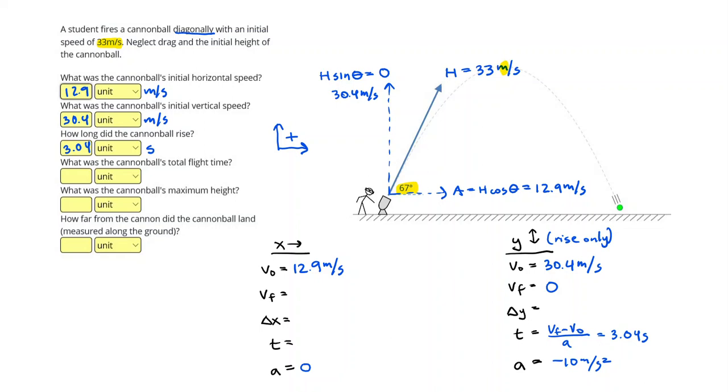Finishing out my y side, to get my displacement, I can do v naught t plus 1 half at squared. Plugging that in, I got 46.2 as my vertical displacement, which is my maximum height. Remember, we analyzed the rise only here, but for x, we're going to analyze the total.